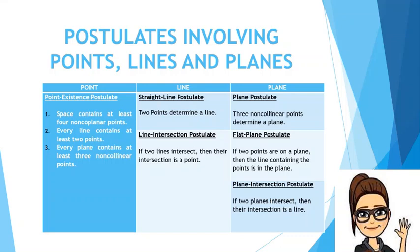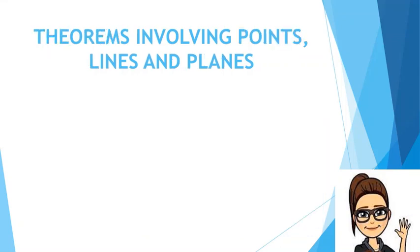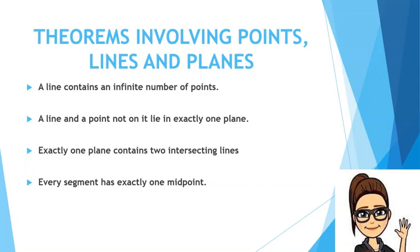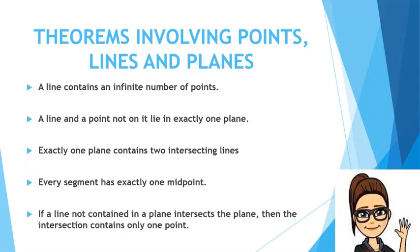These are the postulates involving points, lines, and planes. Now let's have the theorems. One: a line contains an infinite number of points. Two: a line and a point not on the line lie in exactly one plane. Three: exactly one plane contains two intersecting lines. Four: every segment has exactly one midpoint. Five: if a line not contained in a plane intersects the plane, then the intersection contains only one point.